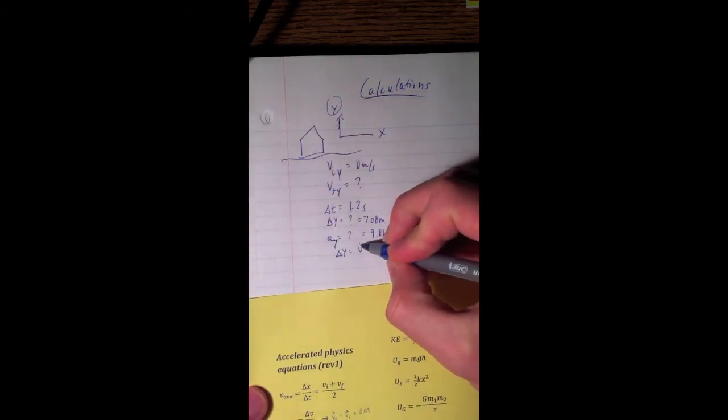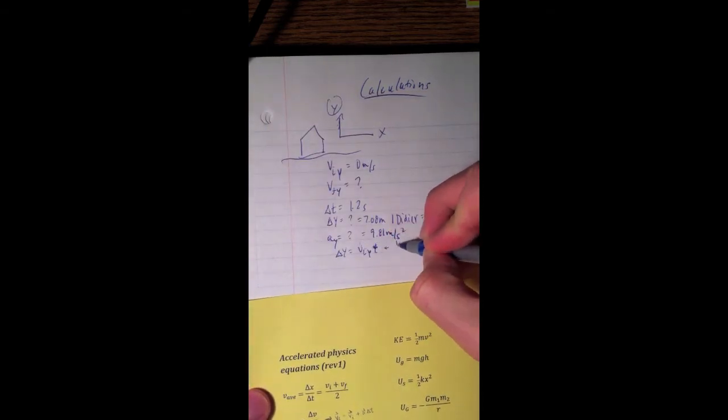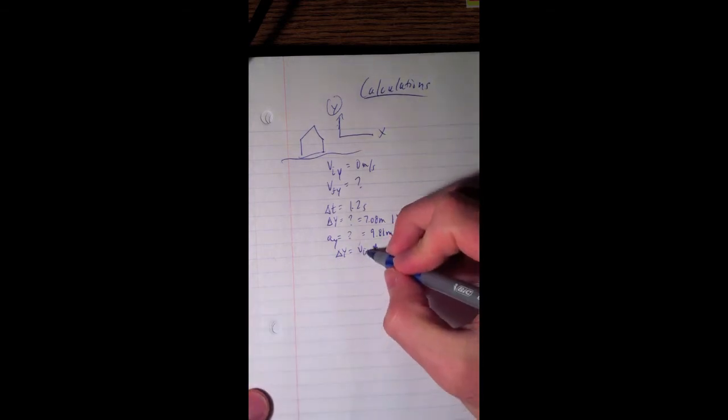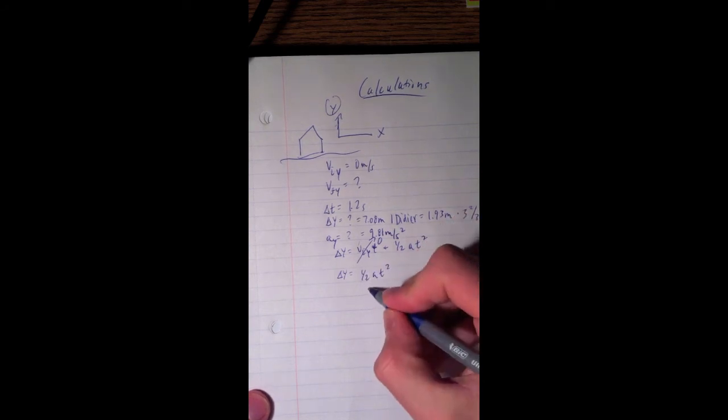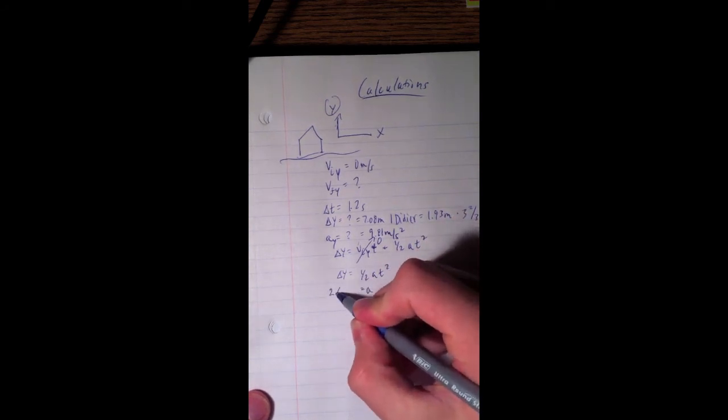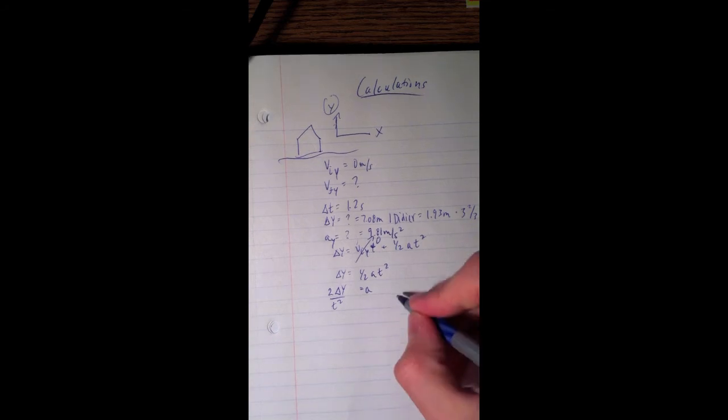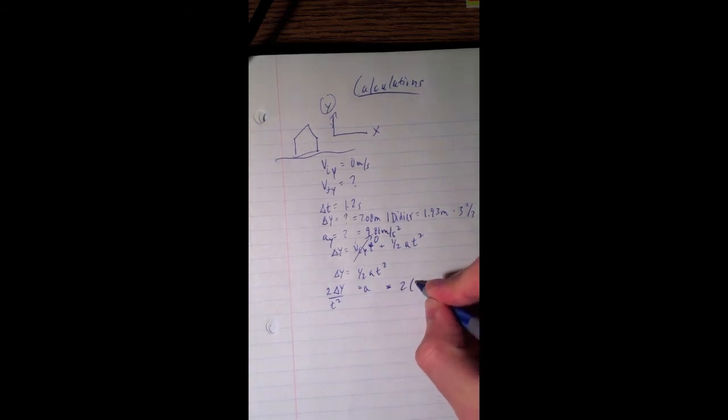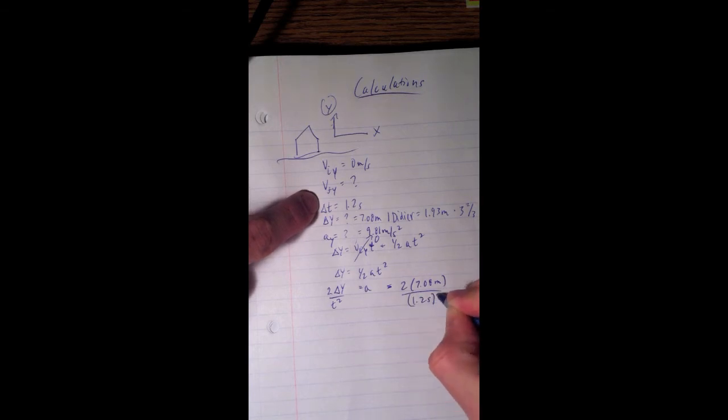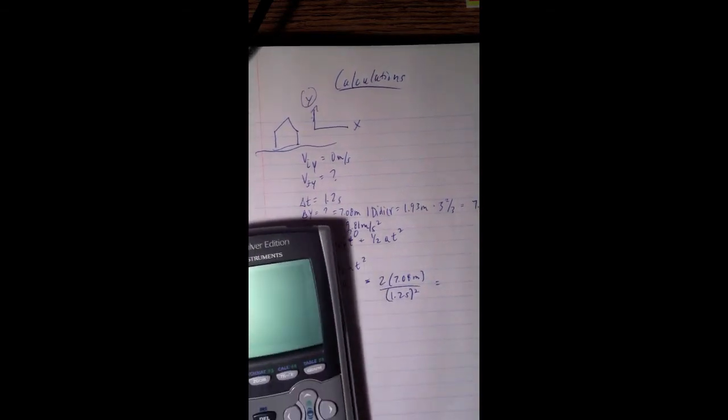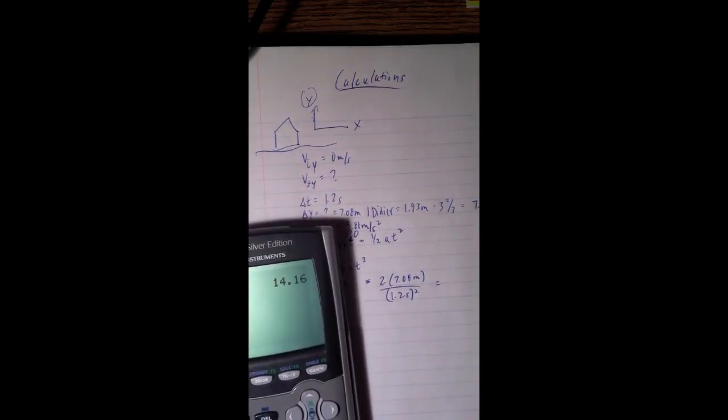Change in y equals v-initial in y times t, plus 1 half at squared. Well, this just goes to 0, since v-initial in y is 0. Change in y equals 1 half at squared. Set this equal to a. 2 times change in y divided by t squared equals a. Plug in some values. 2 times 7.08 meters divided by 1.2 seconds squared. And this is gonna be equal to 9.83 meters per second squared equals a.